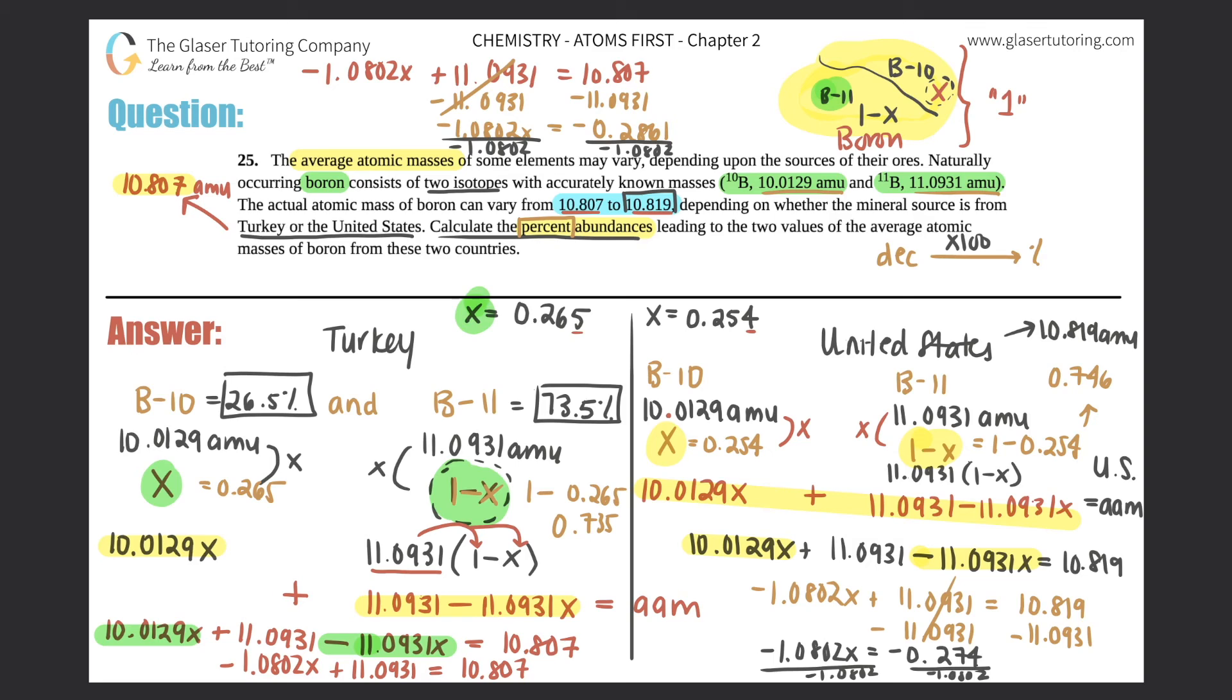And now we just got to turn it into the decimal percent. So you just multiply by 100 or move the decimal over twice to the right. So this would be 25.4% for boron-10. And this would be 74.6%. These are your four answers. The percent abundances if they were from Turkey, the boron was from Turkey. These are the percent abundances if it was from the United States.